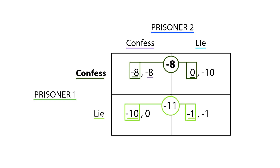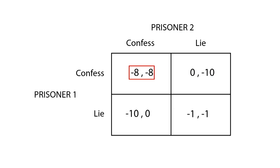The rational thing to do for Prisoner 2 is to confess. Confess-confess is the Nash Equilibrium in this game, since it is the set of strategies that maximizes each prisoner's utility given the other prisoner's strategy.